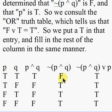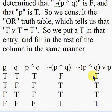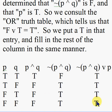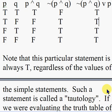From the OR truth table, false OR true is true. So the first entry in the final column is true. We fill in the rest of the column the same way: true OR true is true; true OR false is true; and true OR false is true. All four entries in the final column are true.